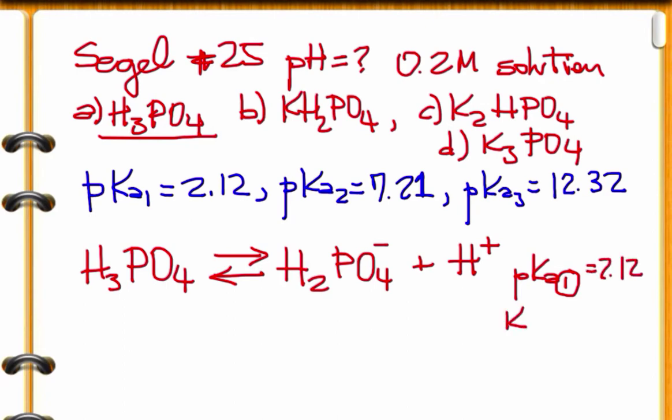We have pKa, so that we have Ka. The pKa is 2.12, therefore, the Ka1 is 10 to the power of negative pKa, which is 2.12. Now we can calculate what Ka1 is going to be 7.58 times 10 to the power of negative 3. Not very strong.